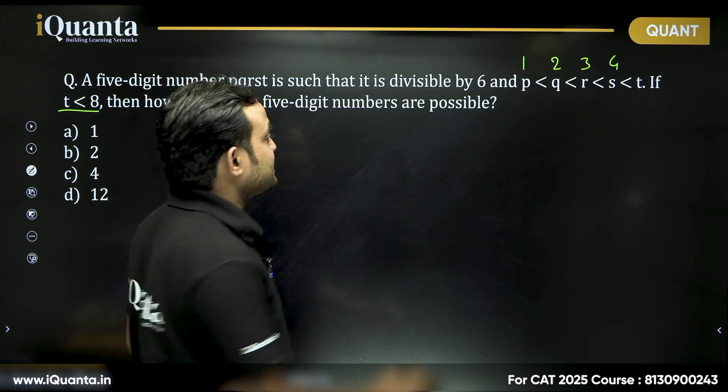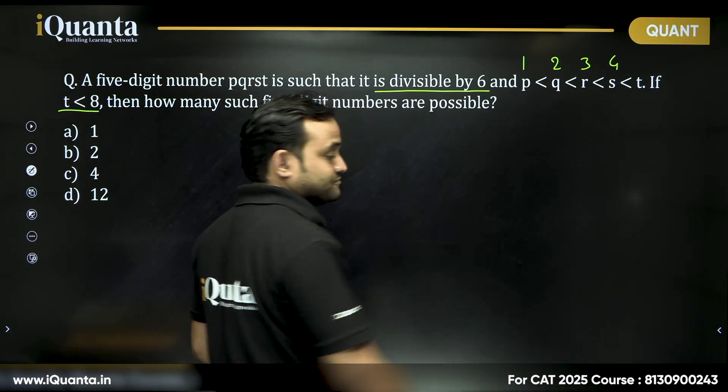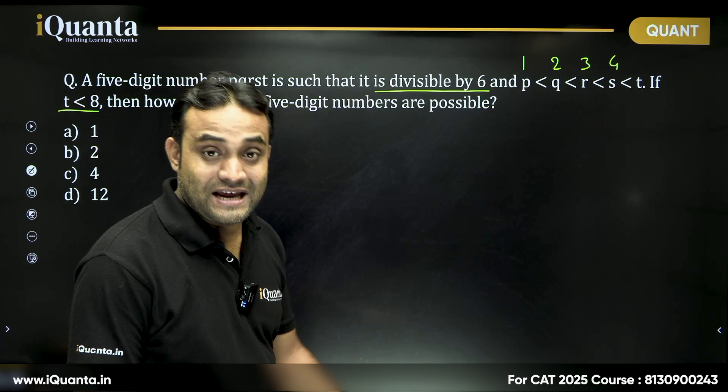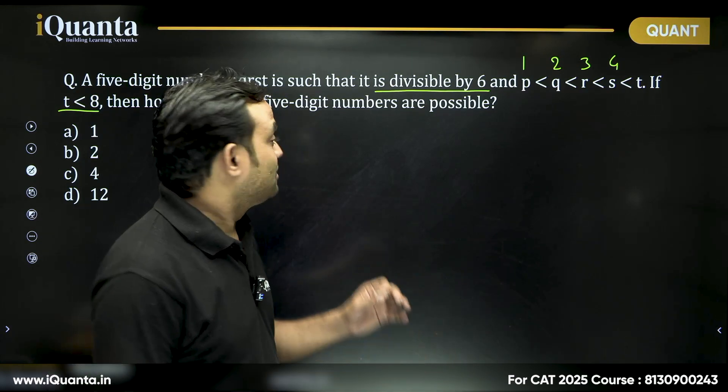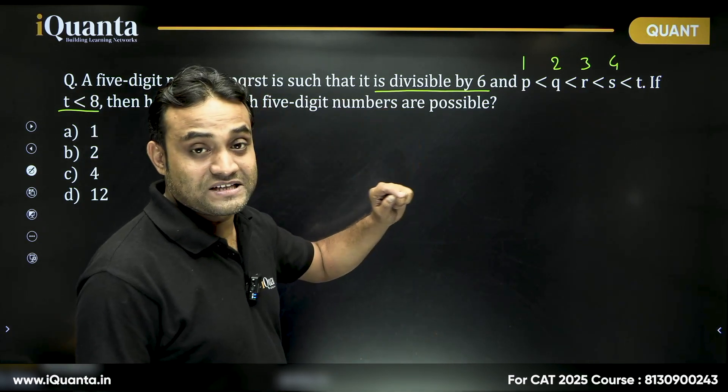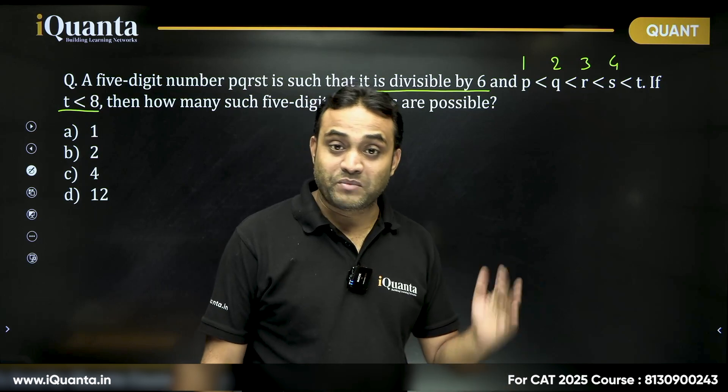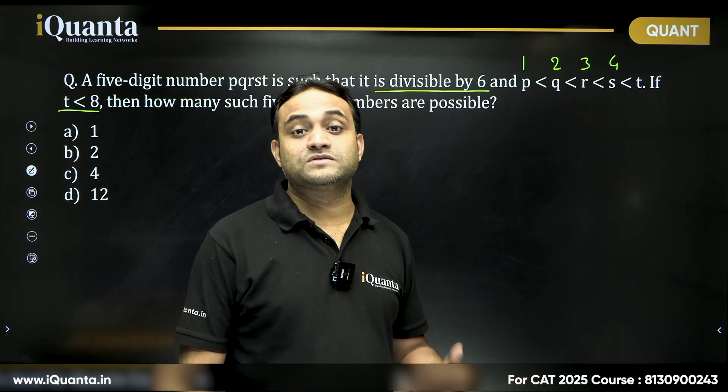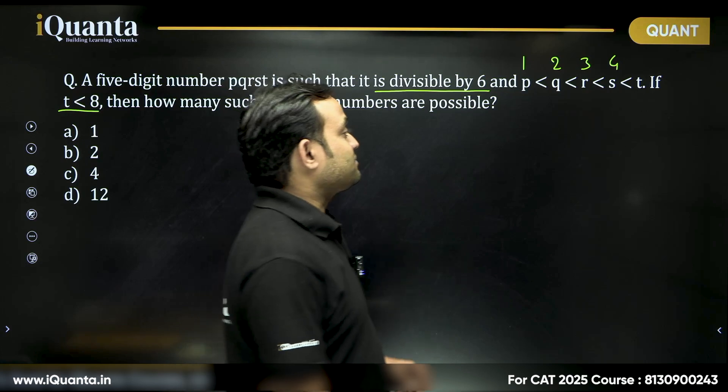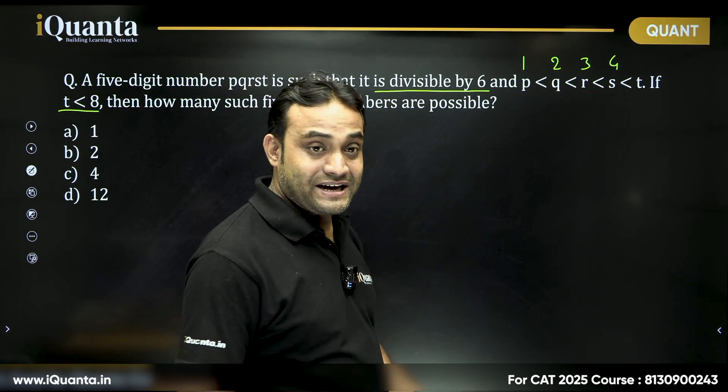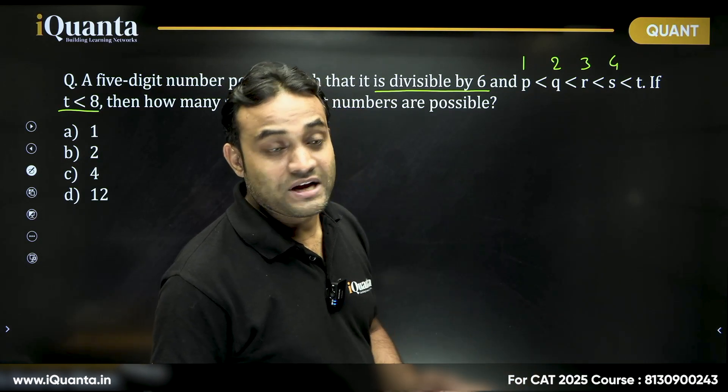But it says this number is divisible by 6. That means T can be only 6, right? Because the number is divisible by 6, then the unit digit must be divisible by 2. The number must be even. That means T must be less than 8, greater than 4, and even.